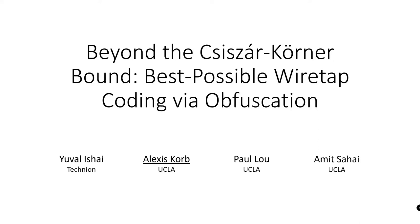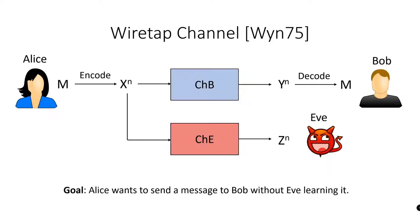My name is Alexis Korb, and I will be presenting our paper on Beyond the Csiszár-Körner Bound: Best Possible Wiretap Coding via Obfuscation. This is joint work with Yuval Ishai, Paul Lou, and Amit Sahai. We first define the wiretap channel, which was introduced by Wyner in 1975.